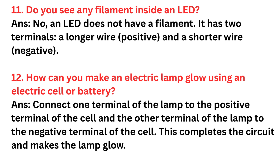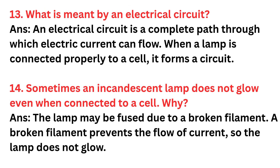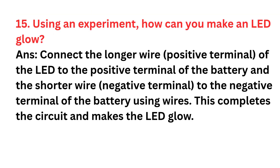Question thirteen: What is meant by an electrical circuit? Answer: An electrical circuit is a complete path through which electric current can flow. When a lamp is connected properly to a cell, it forms a circuit. Question fourteen: Sometimes an incandescent lamp does not glow even when connected to a cell. Why? Answer: The lamp may be fused due to a broken filament. A broken filament prevents the flow of current, so the lamp does not glow.